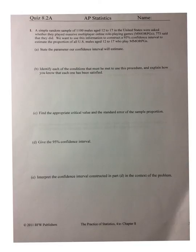Okay, let's look at this one. Now, we're looking at a simple random sample of 1,100 males, 12 to 17, who play these role-playing games. 775 said that they did. We're going to do a 95% confidence interval. State the parameter. Now, parameter is talking about the population. And what are we looking at? We're looking at a proportion. So we want to know the parameter is the proportion of people, 12 to 17 males, that play these games with a 95% confidence. That's the parameter.